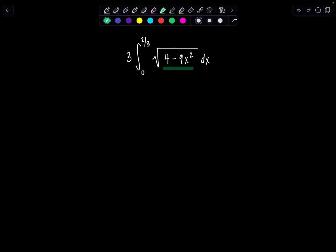So which trig sub is appropriate here? Let's list out all our options, that way you guys can keep them straight. So when you have a constant squared plus a variable squared, then you let x equal a tan theta.